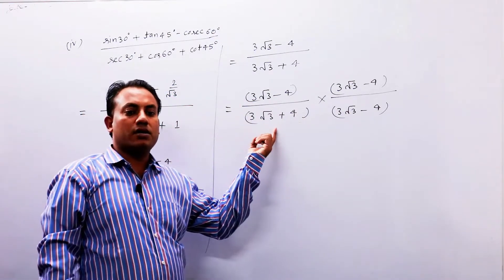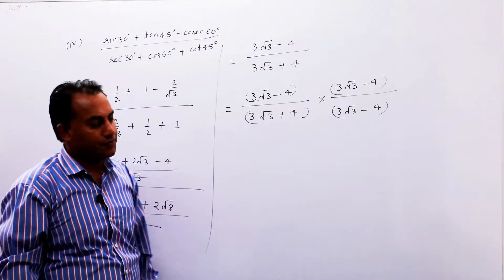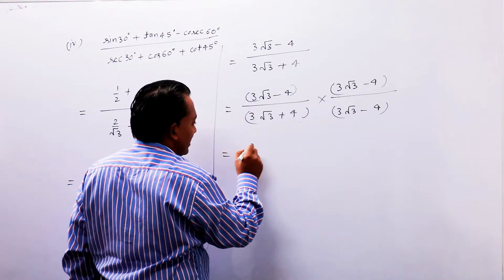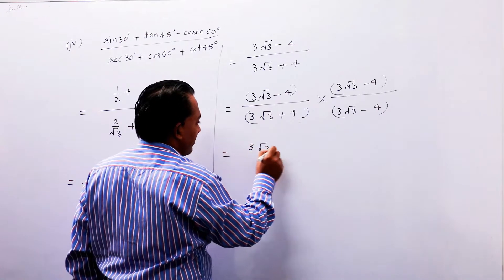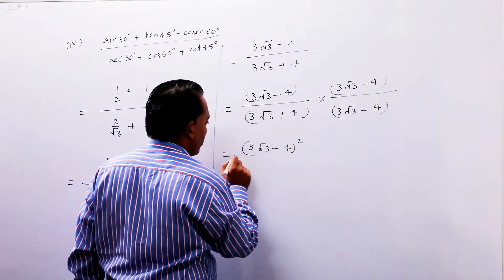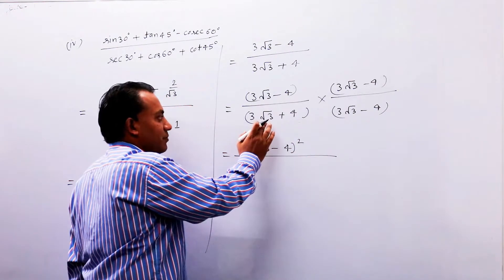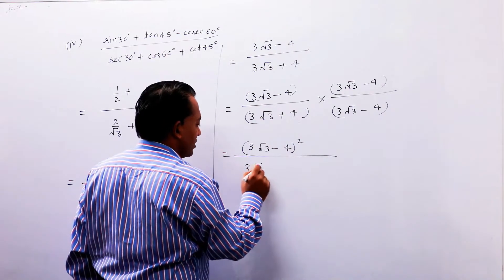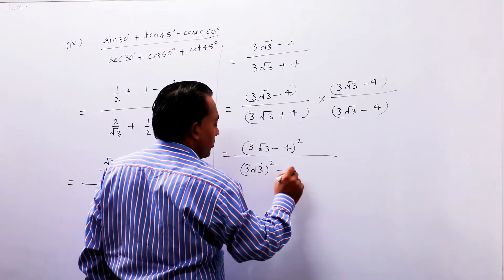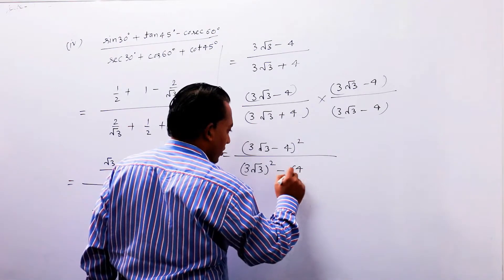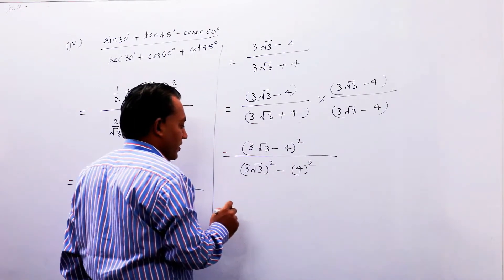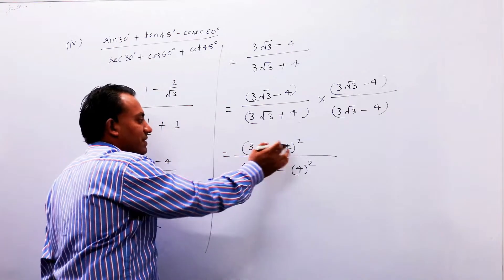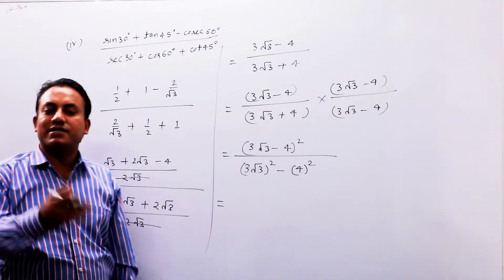Numerator और denominator में rationalizing factor से multiply कर दें। यह हो जाएगा बच्चों (3√3 minus 4) whole power 2। और denominator में a plus b और a minus b की formula लगाएंगे, तो यह हो जाएगा (3√3)² minus 4²।